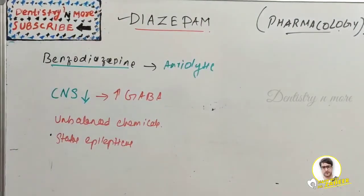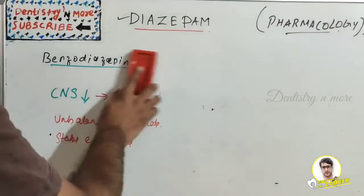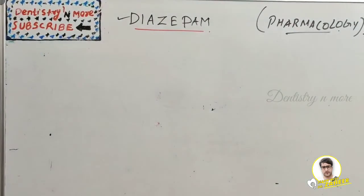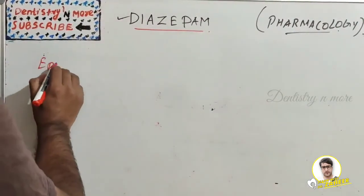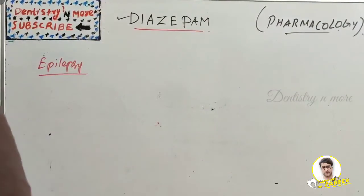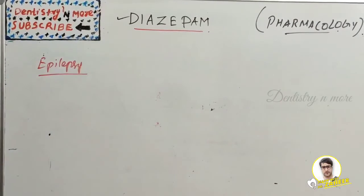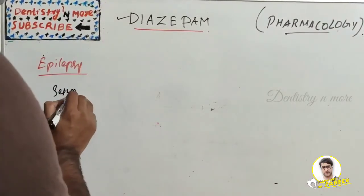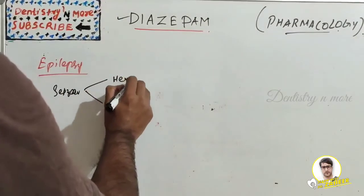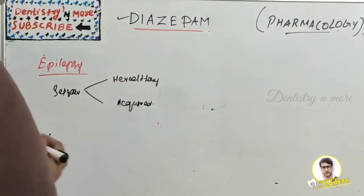Before that, we need to understand a little about epilepsy. Epilepsy, also known as a seizure disorder or fits, is caused by excessive and abnormal brain cell activity. It can occur at any age and may vary in etiology. Seizures can be classified as either hereditary or acquired.